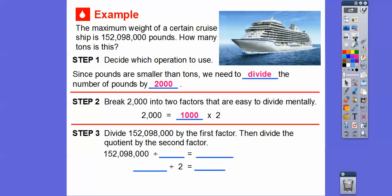So instead of dividing by 2,000, we'll divide this 152,098,000 by the first factor right here, this 1,000 right here. Then we'll divide that quotient, that answer, by the second factor, 2 right here. So this 152,098,000, we're going to divide it by the first factor right here, which is 1,000 right there.